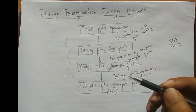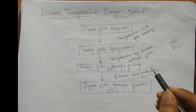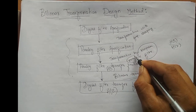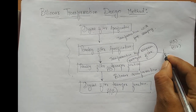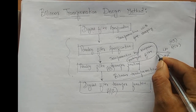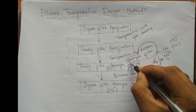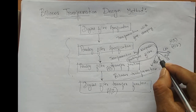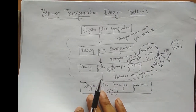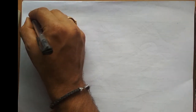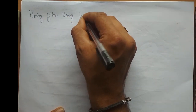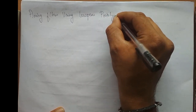Now, I cannot directly design a low-pass, high-pass, band-pass, or band-stop filter. First, I need to obtain the low-pass prototype filter. From this low-pass prototype filter, I can convert it to a low-pass, high-pass, band-pass, or band-stop filter for a given specification. Now let us discuss analog filters using low-pass prototype transformation.